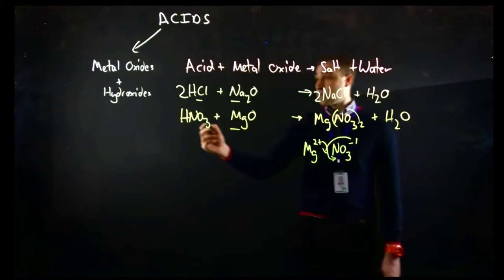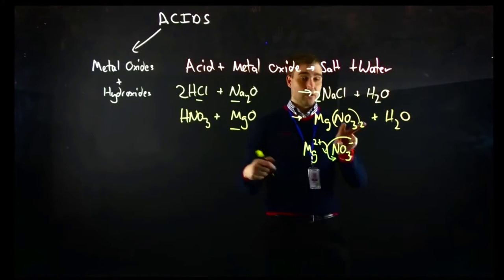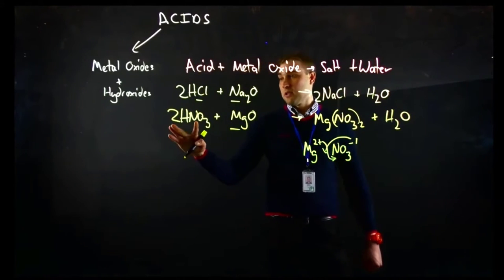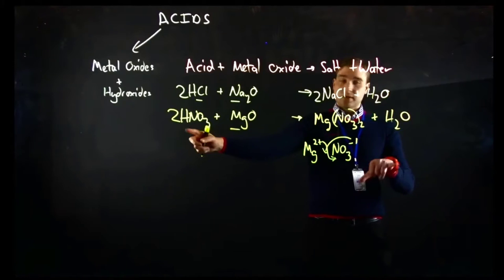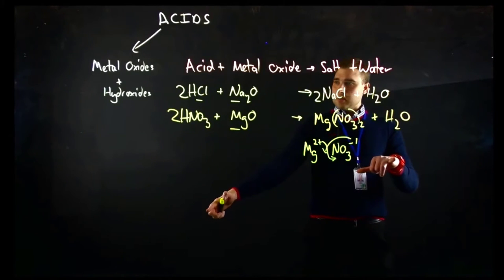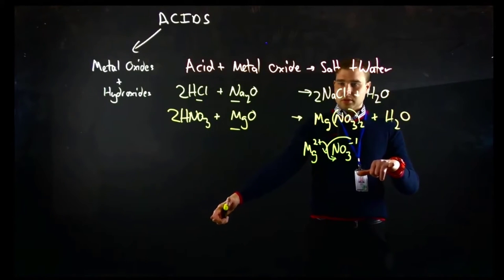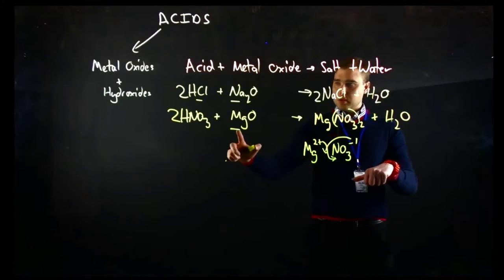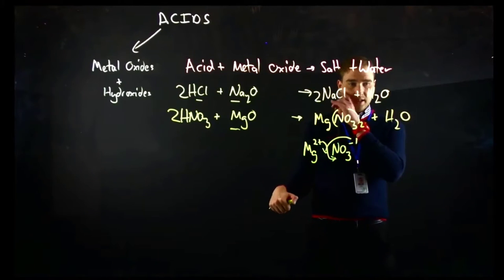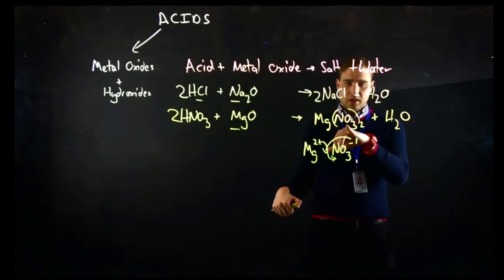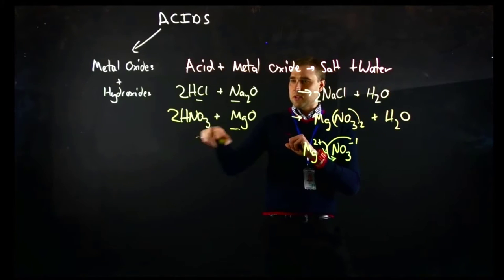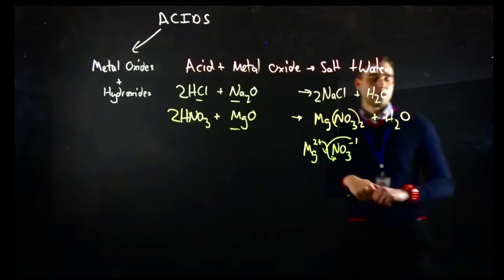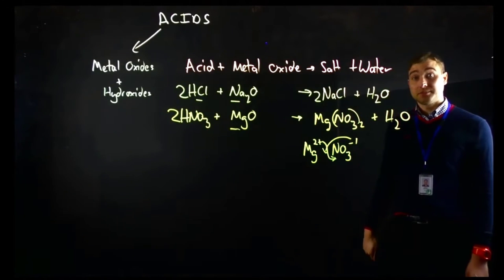Now we need to balance. We've got two nitrates here but only one nitrate over here, so we need two nitrates and two hydrogens. Checking oxygens: one magnesium on each side, seven oxygens on each side — so we're okay. So now we're balanced.